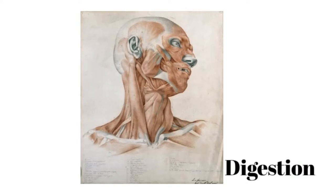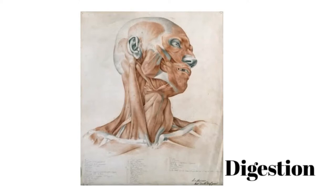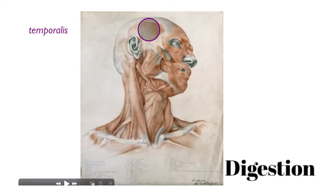Let's continue our discussion on the digestive system. Here we're looking at a drawing of some muscles of the neck and head, and the reason I have this image is to show you some muscles of mastication or chewing. We'll focus on four muscles or four general groups of muscles.